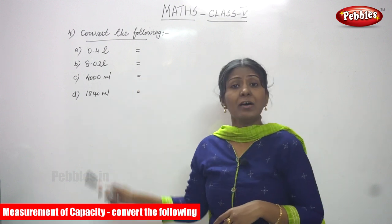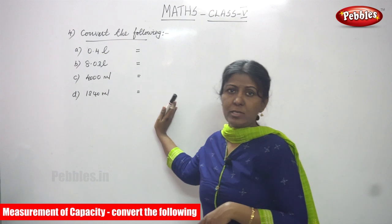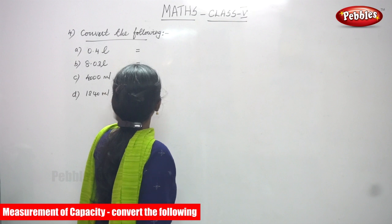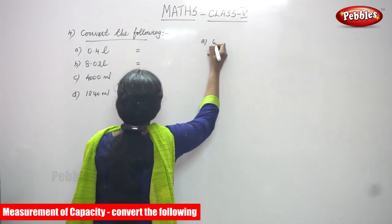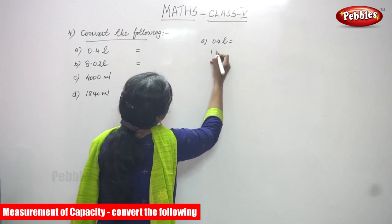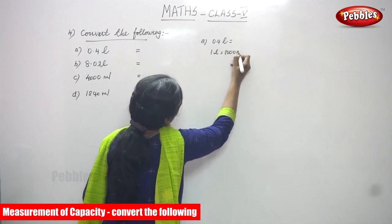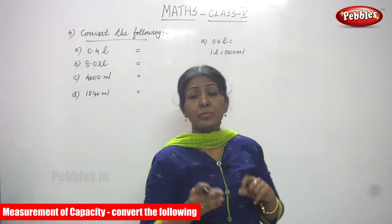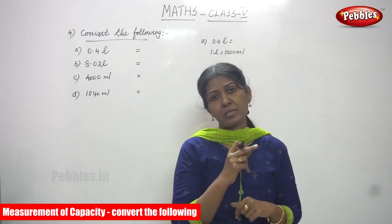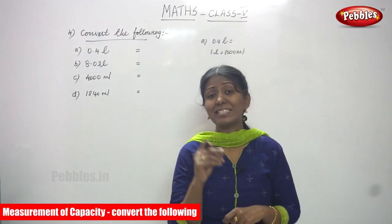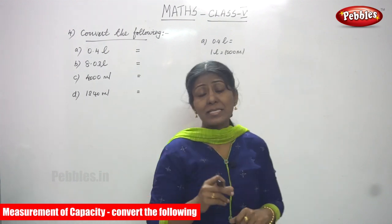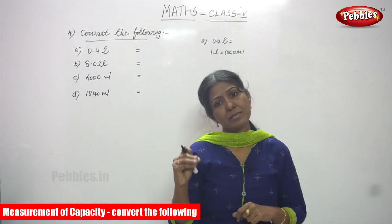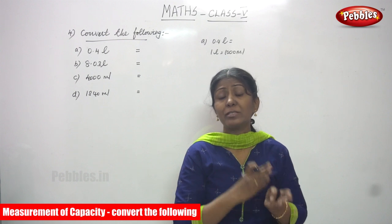Now we are going to convert the following using the formula. The first question is 0.4 liters. One liter is equal to 1000 ml. Here, liter is the bigger unit and milliliter is the smaller unit. When you convert a bigger unit to a smaller unit, you should multiply by 1000.